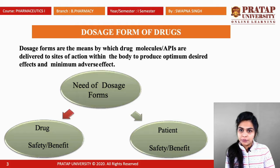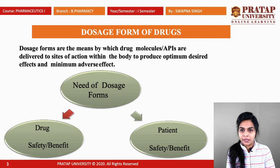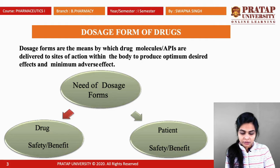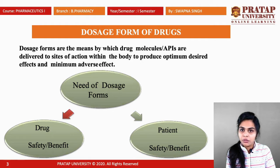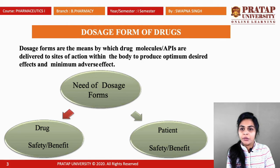Dosage forms are the means by which drug molecules or active pharmaceutical ingredients are delivered to the site of action within the body to produce the optimum desired effect and minimum adverse effect. In other words, the main meaning of dosage form is that the drug molecule or active pharmaceutical ingredient is delivered to the body's site of action, where it shows its therapeutic effect plus minimum adverse effect.